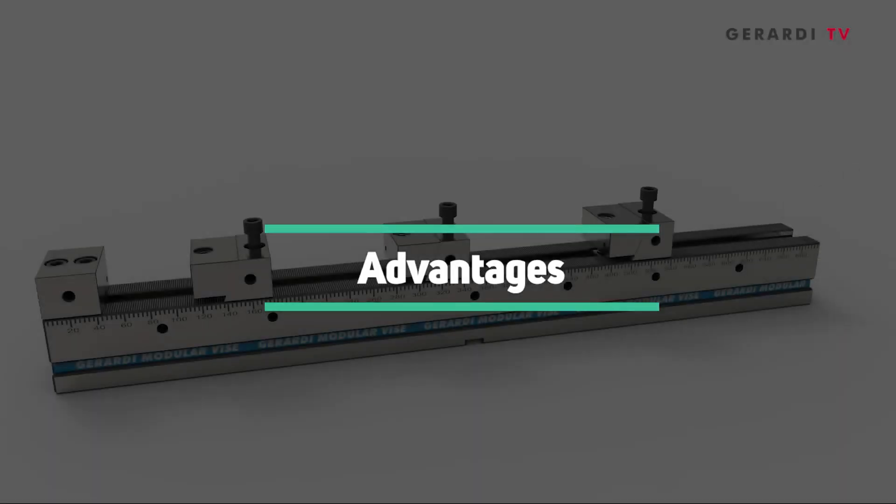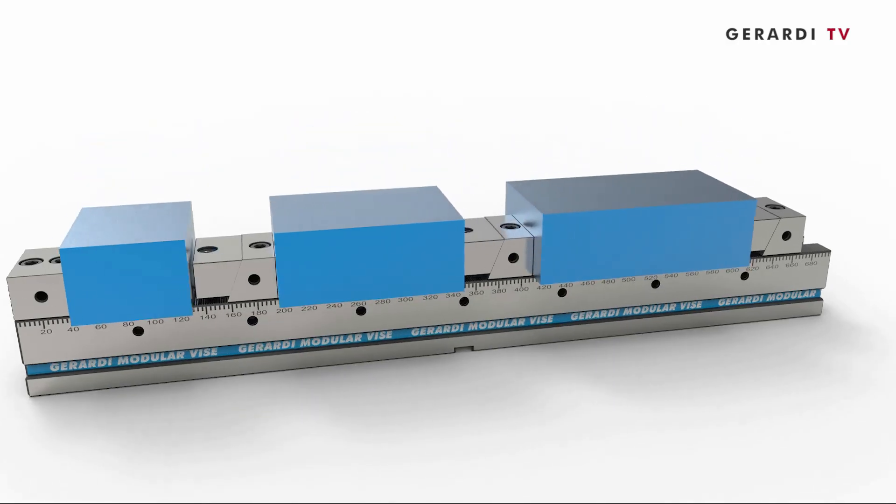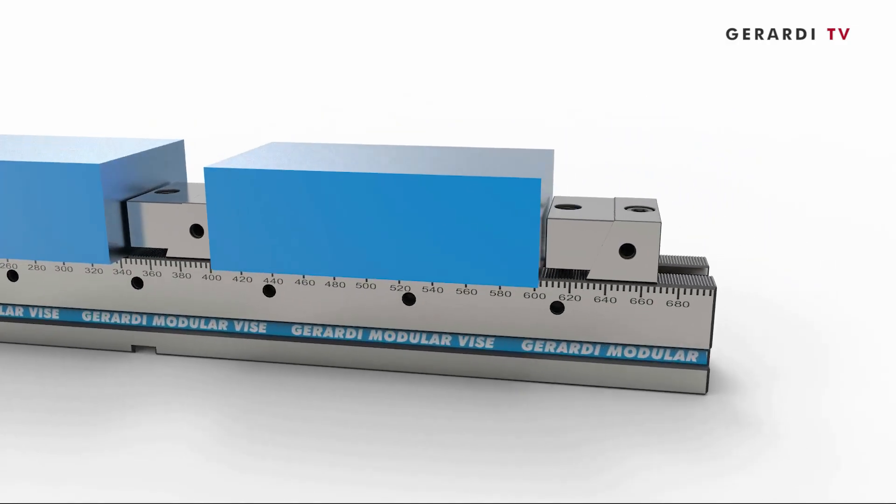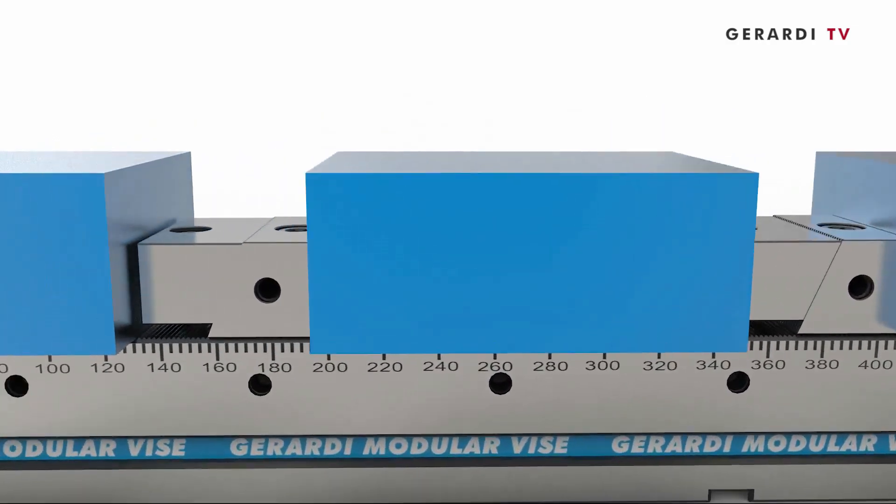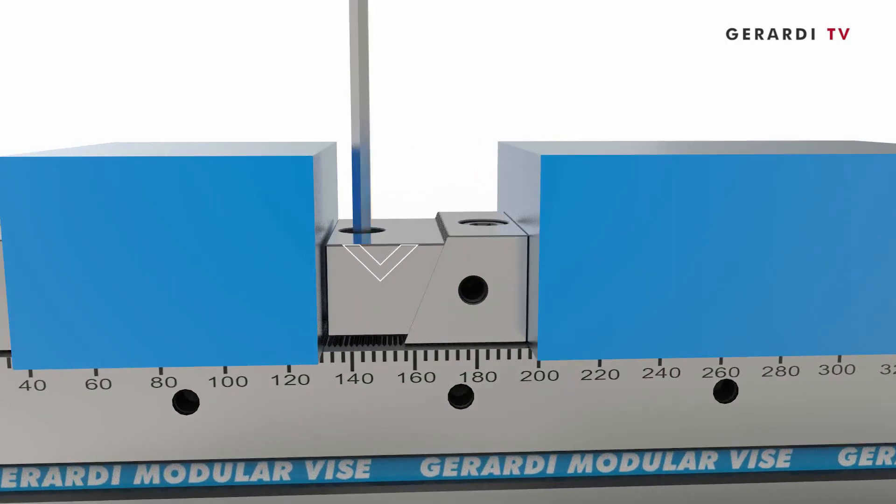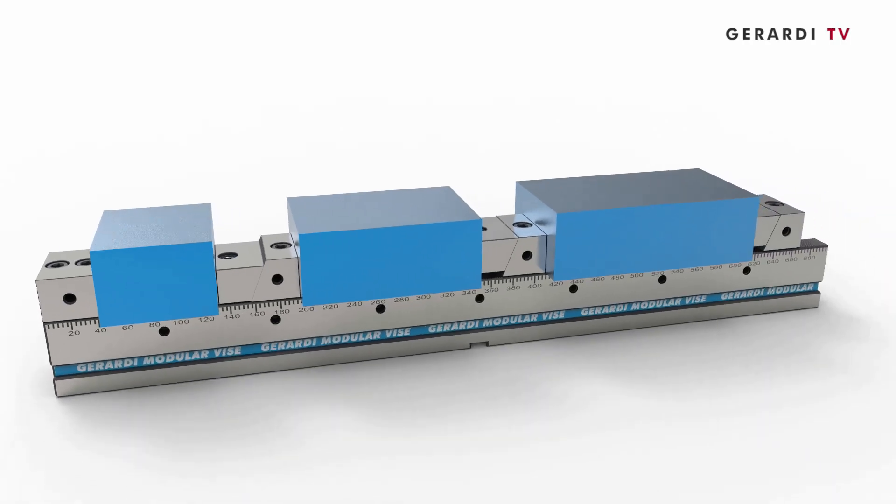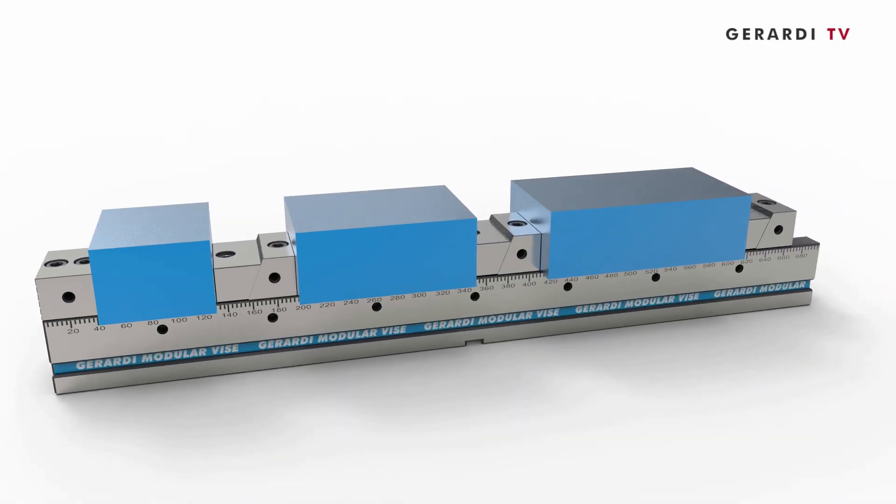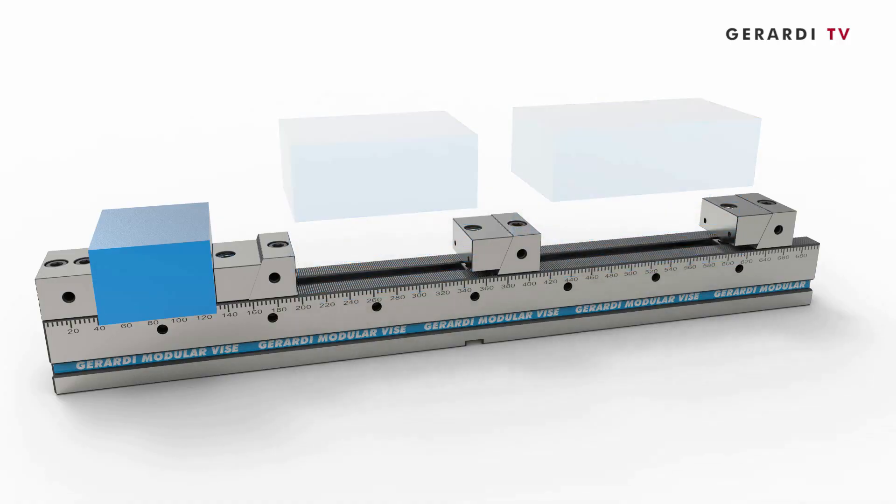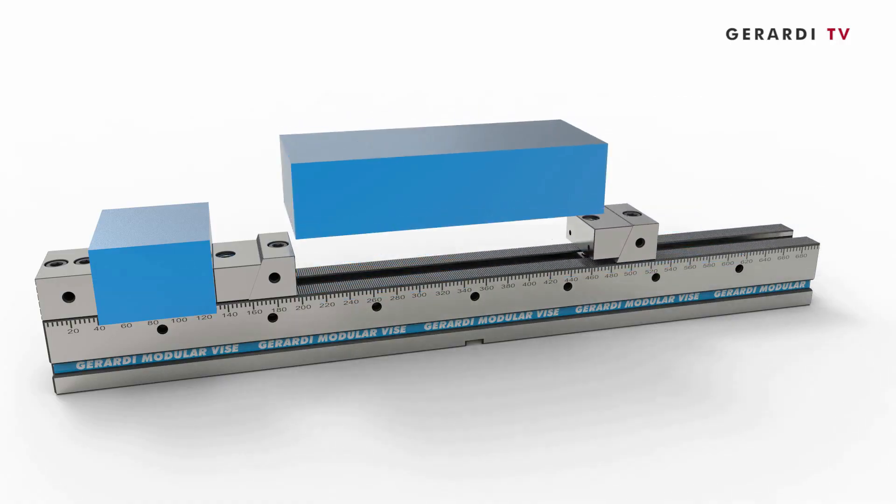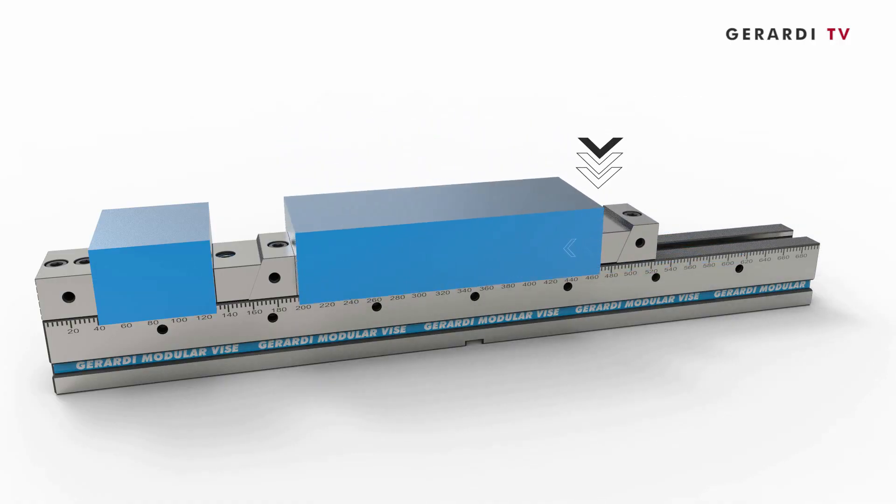The multi-flex vise series is a totally new concept of modular clamping system able to maximize the machine table capacity and increase its productivity, reducing the times to the minimum. This system is designed for clamping several workpieces at the same time on the machine tool table, thus reducing changeover times and load and unload times too.